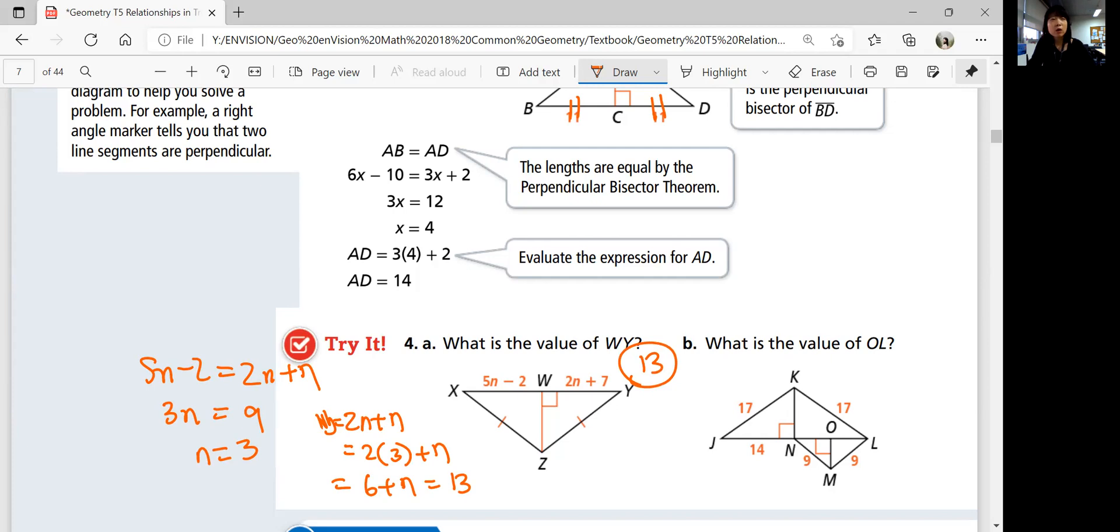What about OL? We're trying to figure this one out. How do you know that? Well, first, look at the bigger triangles. These two are 17, right? So they're congruent. We know these two are congruent, and that's a perpendicular. So KN is a perpendicular bisector by perpendicular bisector theorem. So JN and NL should be the same, right? So NL is 14.